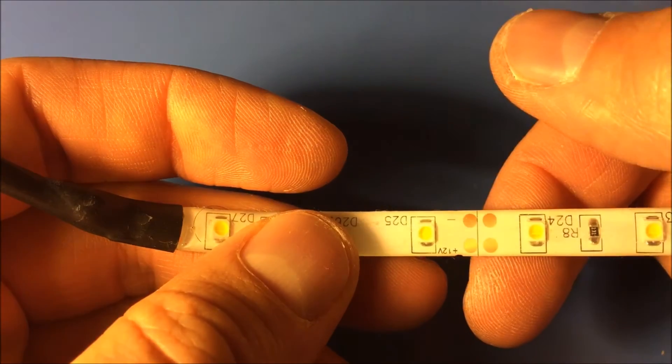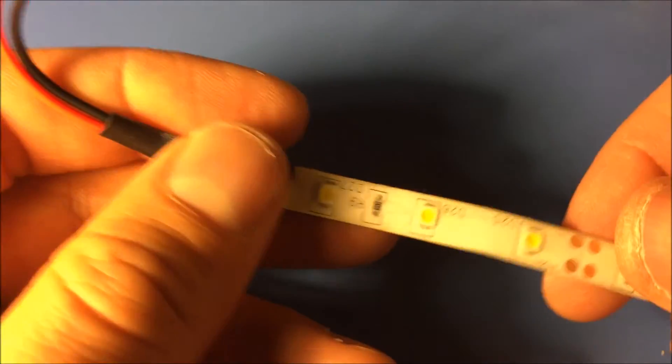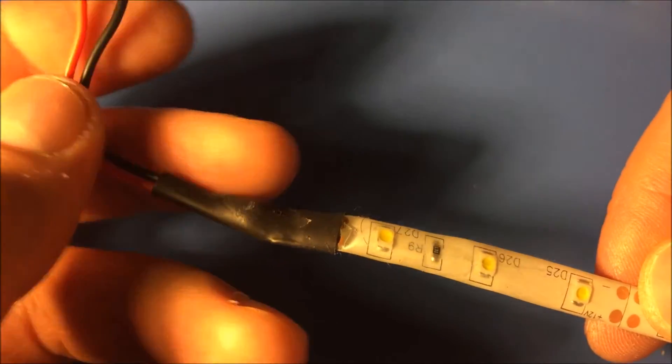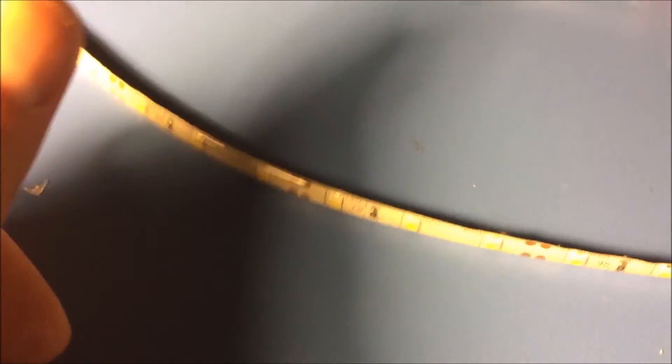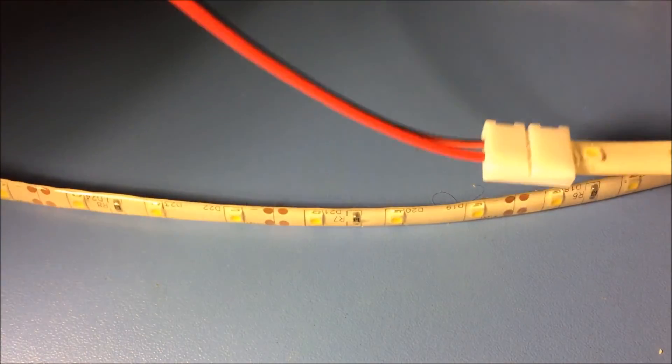If you cut it from here, you have to attach new wires. You can do that by soldering new wires, or like I did here, you can use a clip-on connector.